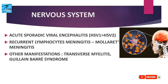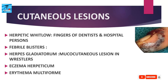HSV can cause recurrent lymphocytic meningitis. Other nervous system manifestations include autonomic nervous system involvement such as sacral ganglion involvement, transverse myelitis, and Guillain-Barré syndrome.